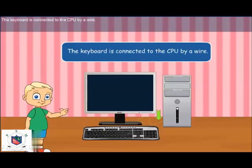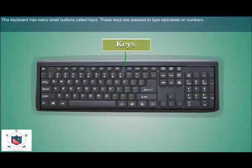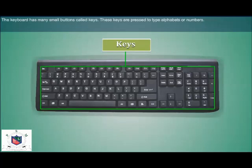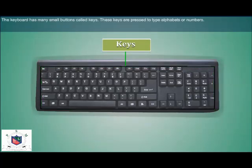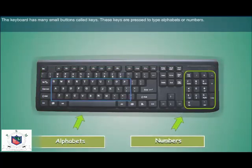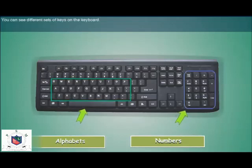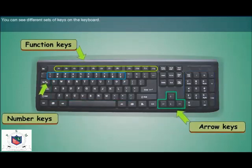The keyboard is connected to the CPU by a wire. The keyboard has many small buttons called keys. These keys are pressed to type alphabets or numbers. You can see different sets of keys on the keyboard.